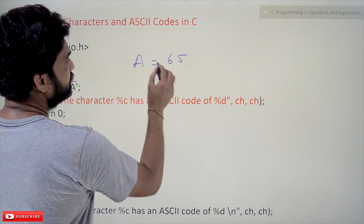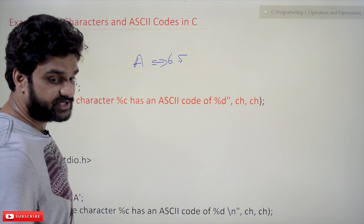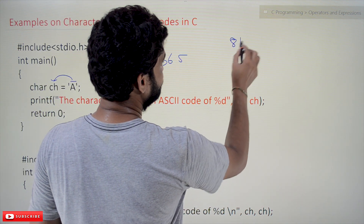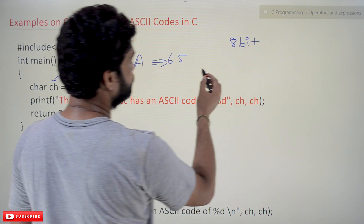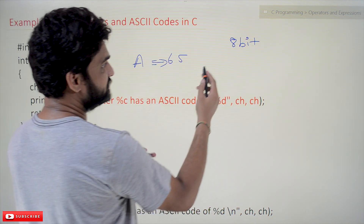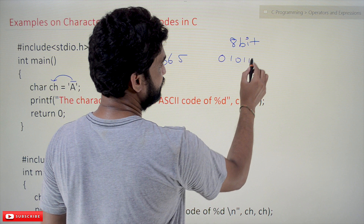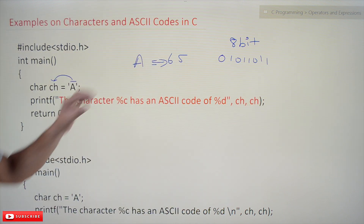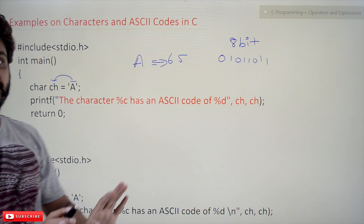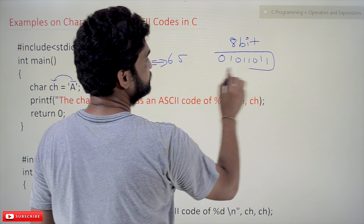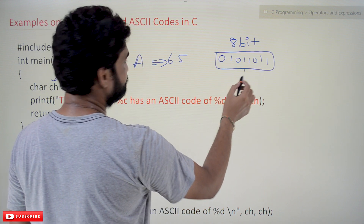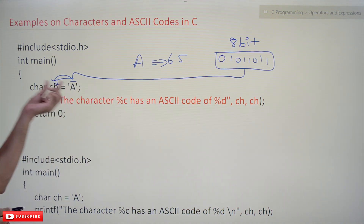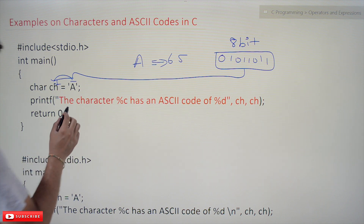What happens is the ASCII code of character 'A' is 65. It is going to be taken in 8-bit values, and the binary equivalent — assume that this is the binary code — and this binary code will get stored in CH.